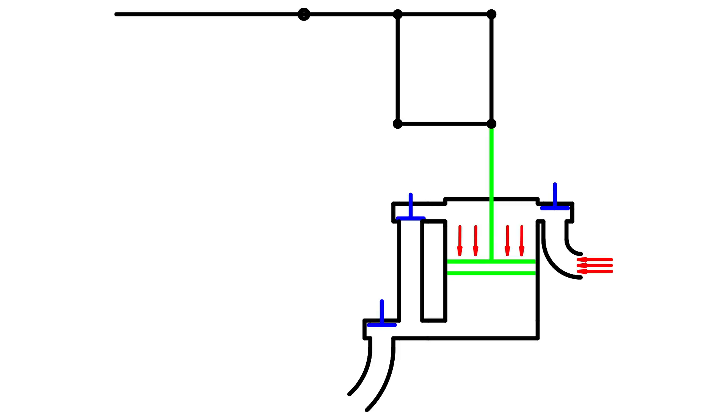Now, the throttle valve is opened slightly. Steam and exhaust valves are opened. Steam pressure pushes the piston down, which makes the pump go up.